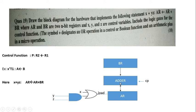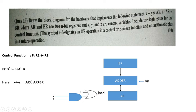Whenever the output of this OR gate becomes high, it performs a load operation — meaning after the addition, the resultant value is loaded back into the AR register only when this OR gate output is 1. This occurs when x equals 1, or yz equals 1, or both. This is the complete solution. If you understand this idea, you can solve any such question. This was asked for 10 marks. Thank you.